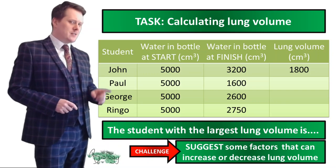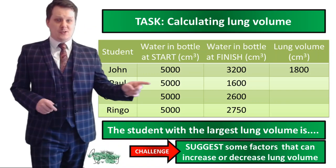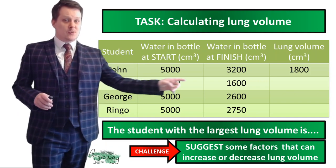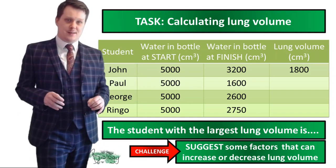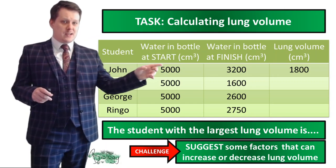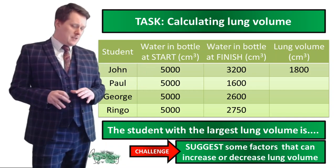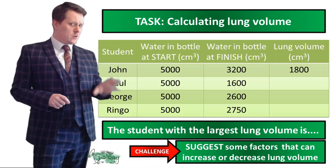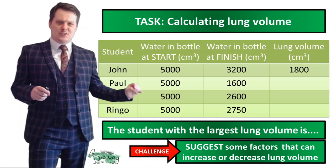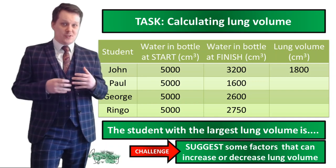On your worksheet, calculate the lung volume for three students. Each student started with 5,000 cm³ in their bottle, and the worksheet shows what they finished with. Use the first student's data to practice — if you get 1,800 at the end, your calculation is correct. For a challenge, suggest some factors that can increase or decrease your lung volume.